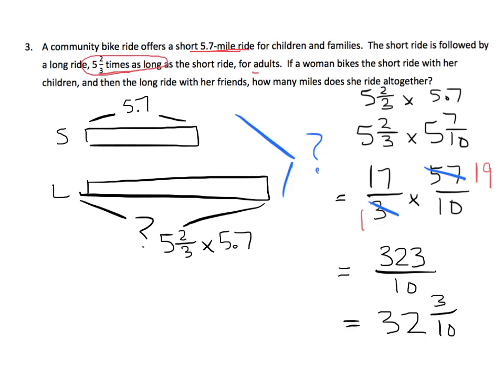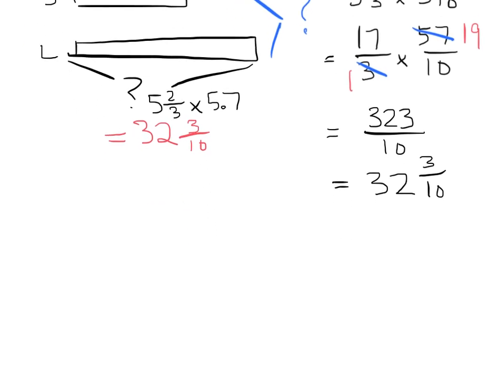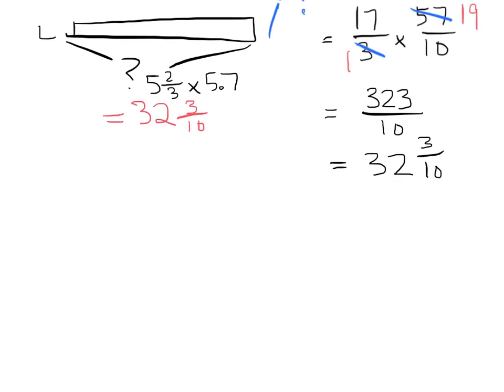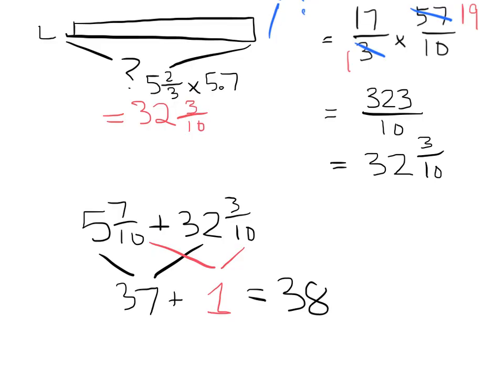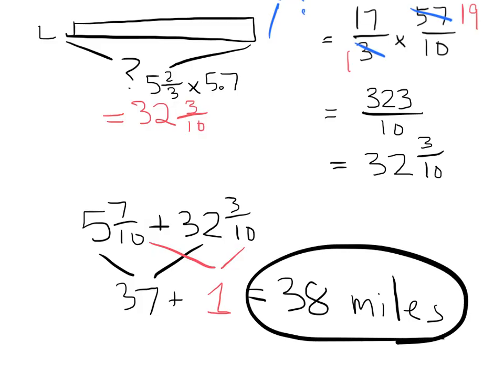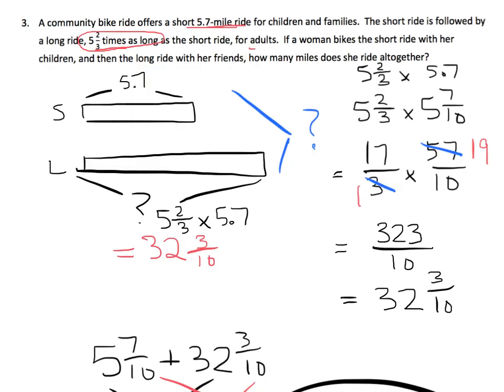Now, we're supposed to find the total. So we know that this answer right here is 32 and 3 tenths. So now we're going to add 5 and 7 tenths plus 32 and 3 tenths. I'm going to do it as a fraction. So 5 plus 32 is 37. And I can see that 7 tenths plus 3 tenths is equal to 1. So our final answer is 38. So that woman bicycles 38 miles. Oh my goodness, that's a lot of biking.